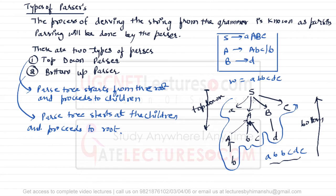There is a challenge with both parsers. For the top-down parser, if there are multiple choices, we must decide which choice to select. Similarly, the bottom-up parser also has to decide which of the multiple choices it should reduce back to. I'll explain that in coming videos — just understand what top-down and bottom-up parsers are for now.